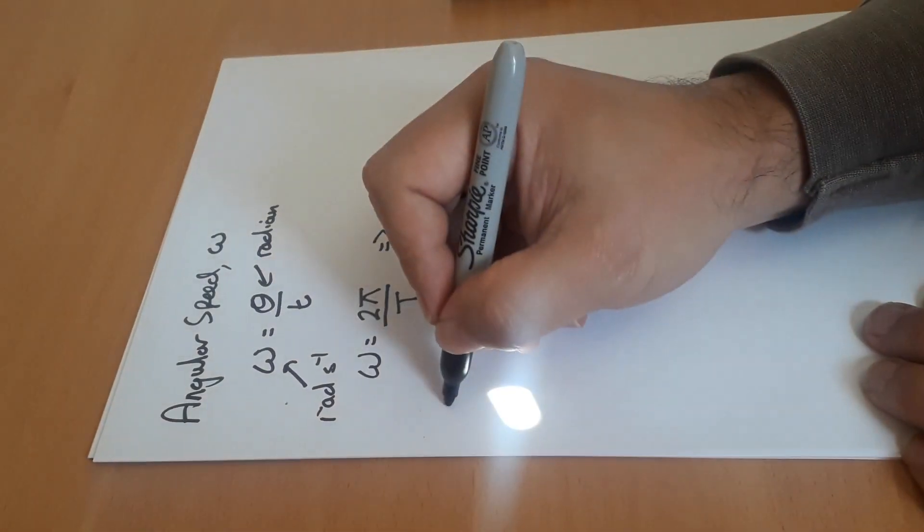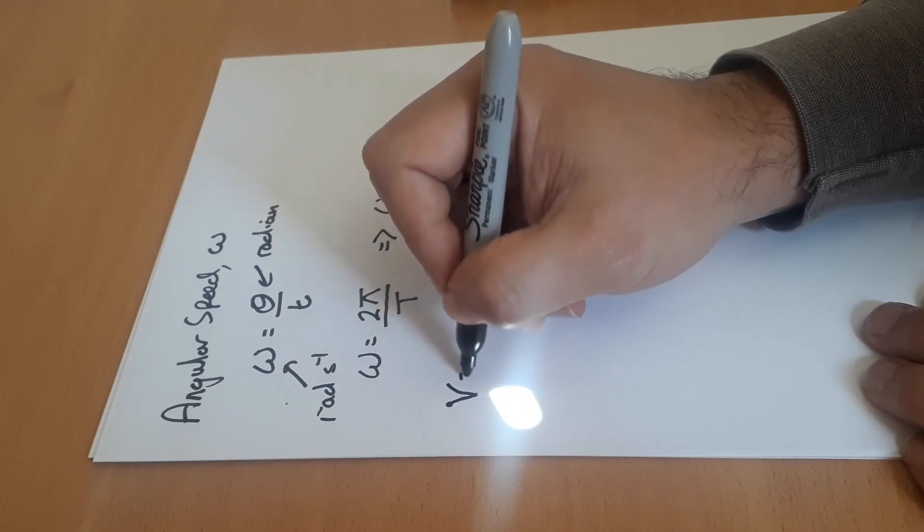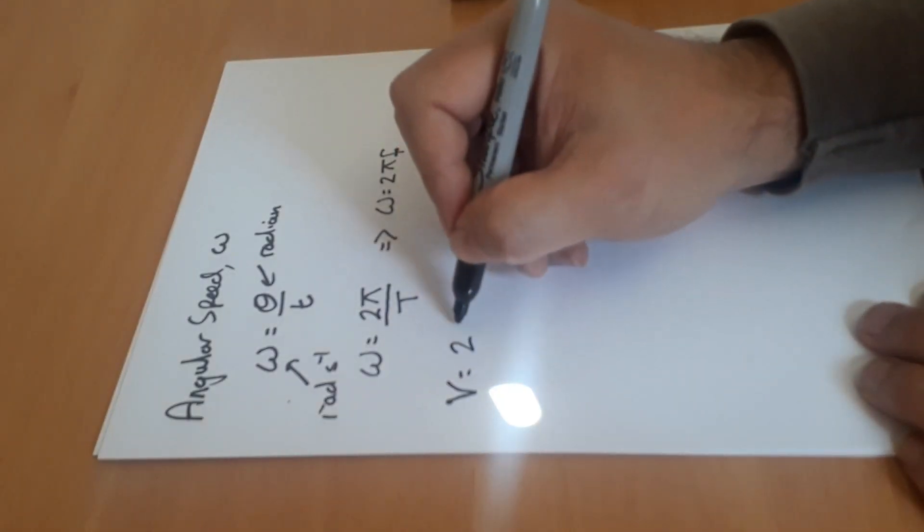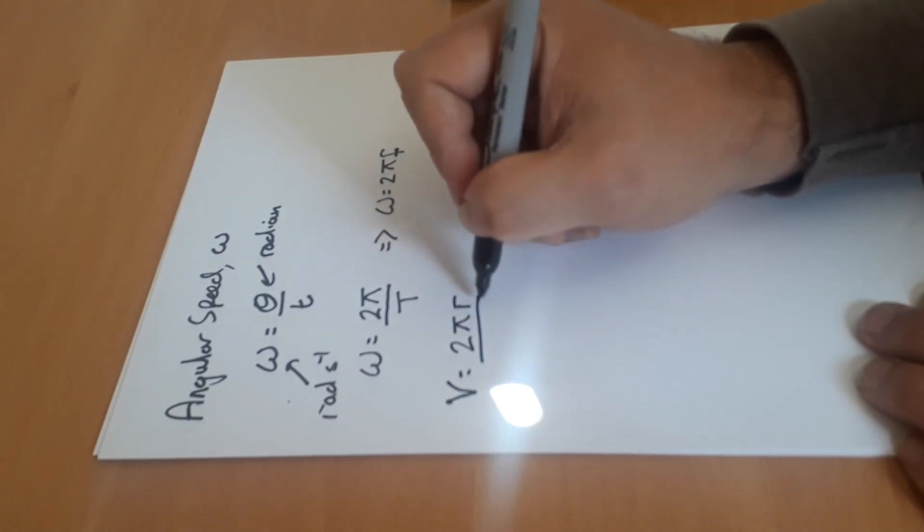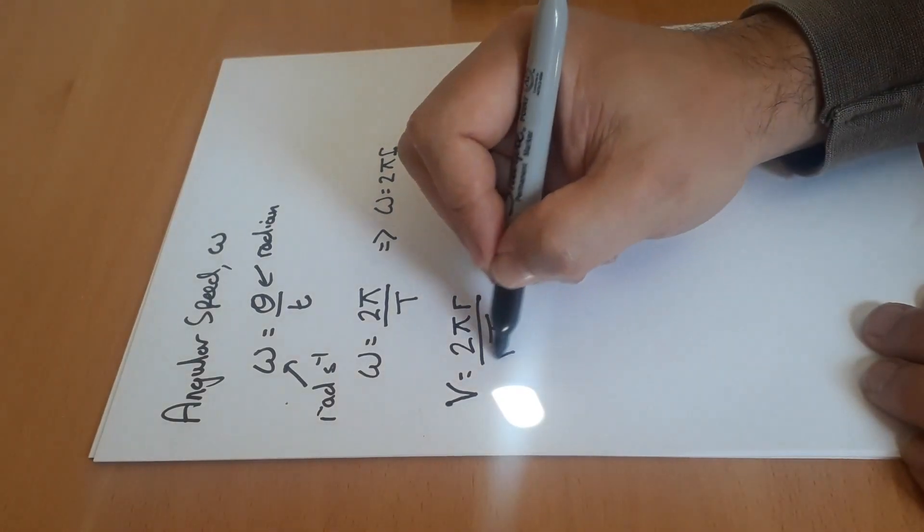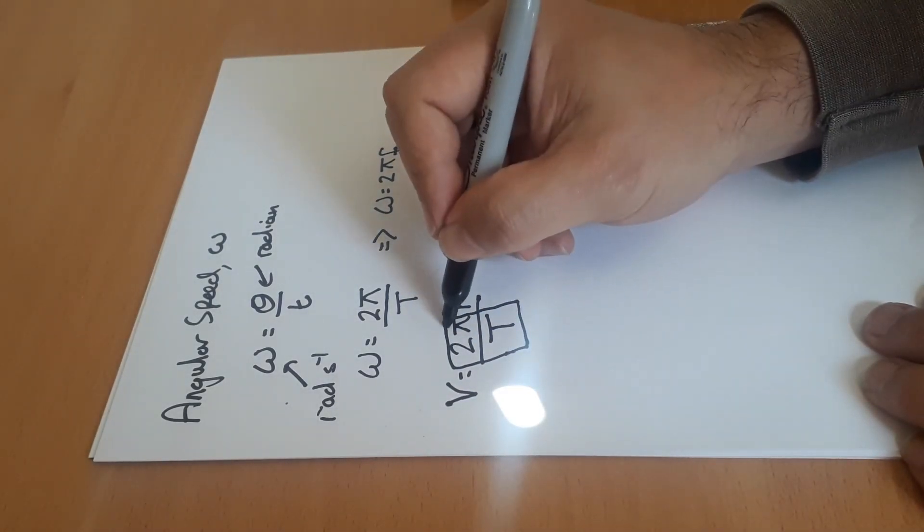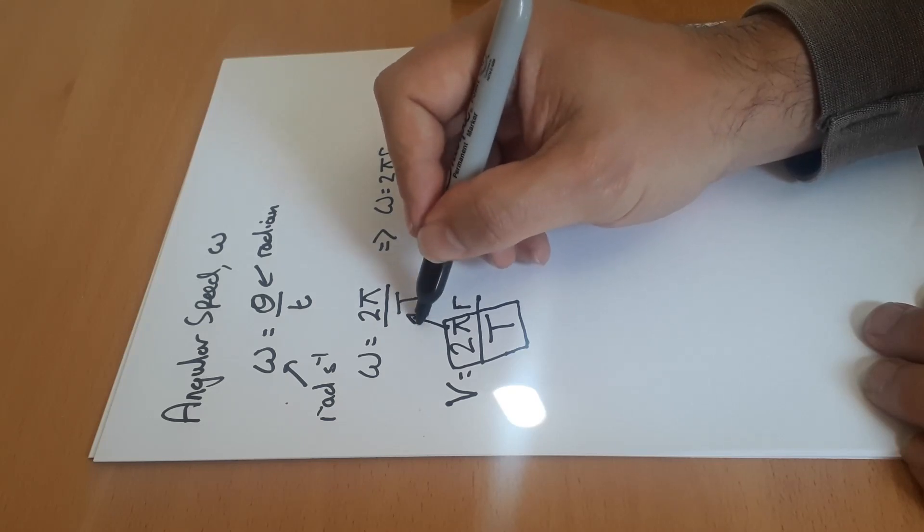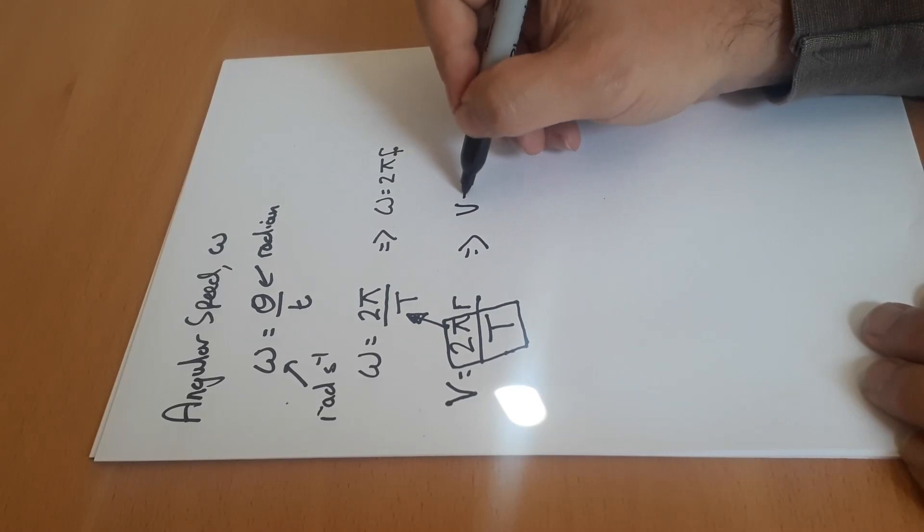And we've already looked at the fact that v is equal to 2πr over T. Now if you think this bit here is equal to omega, therefore v can also equal r omega.